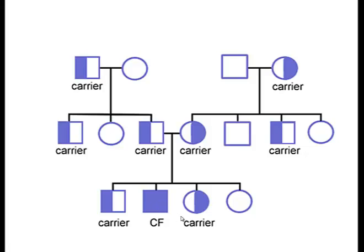I encourage you to quiz yourself and make sure you can state the genotypes of all these offspring — you might pause the video at this point. Here are the answers: this individual is homozygous dominant, this individual is heterozygous, this individual is heterozygous, and this individual is homozygous recessive. That is the most prominent autosomal recessive genetic disorder affecting North Americans today.